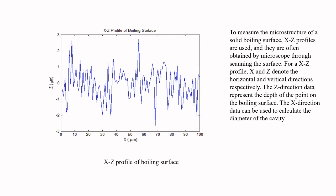Here we show an XZ profile of a boiling surface. To measure the microstructure of a solid boiling surface, XZ profiles are used, and they are often obtained by microscope through scanning the boiling surface. X and Z denote the horizontal and vertical directions respectively. The Z-direction data represents the depth of the point on the boiling surface, and the X-direction data can be used to calculate the diameter of the cavity on the boiling surface.